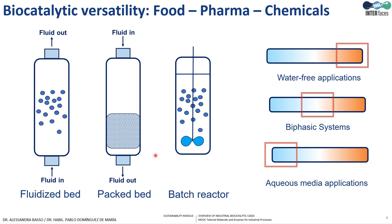First of all, we can use batch reactors in which there are no continuous processes, and in which we might have the enzymes or cells immobilized or not. We can also have continuous processes either in fluidized bed reactors or in packed bed reactors. Depending on the application, the industry will choose one of these kinds of reactors.